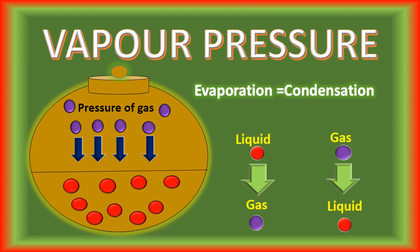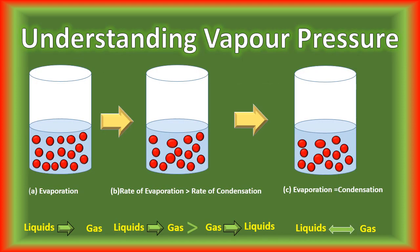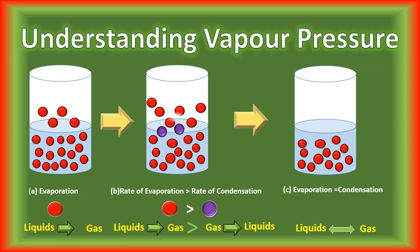Let's discuss what is vapor pressure, with the help of animation. Consider a liquid in a closed container. Initially, the liquid is changing into the gaseous state — evaporation starts. At the beginning, the rate of evaporation is fast whereas there is no condensation. With time, the rate of evaporation is greater compared to the rate of condensation. Evaporation is the change of liquid into the gaseous state, represented by red circles, whereas condensation is the change of gases into the liquid state, represented by purple circles.